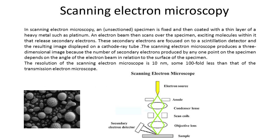Scanning Electron Microscopy: In Scanning Electron Microscopy, an unsectioned specimen is fixed and then coated with a thin layer of a heavy metal such as platinum. An electron beam then scans over the specimen, exciting molecules within it that release secondary electrons. These secondary electrons are focused onto a scintillation detector and the resulting image displayed on a cathode ray tube. The scanning electron microscope produces a three-dimensional image because the number of secondary electrons produced by any one point on the specimen depends on the angle of the electron beam in relation to the surface of the specimen.